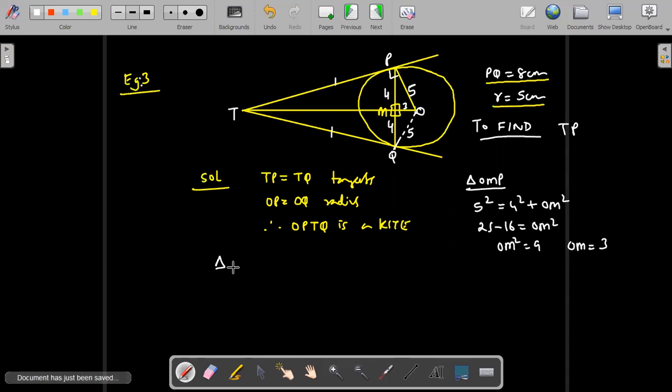Now comes the similarity concept. You will take triangle OMP and triangle OPT and prove them similar. You've done similar triangles. So I know that if two angles are equal then the triangles by similarity concept of AA are going to be similar to each other.